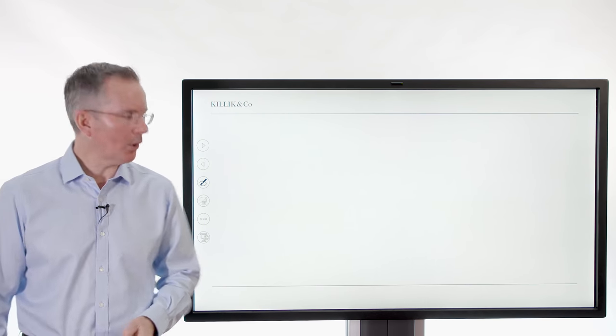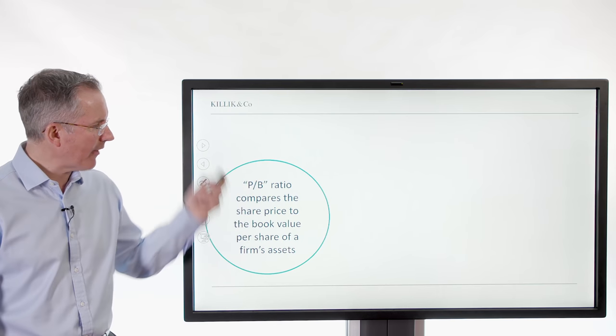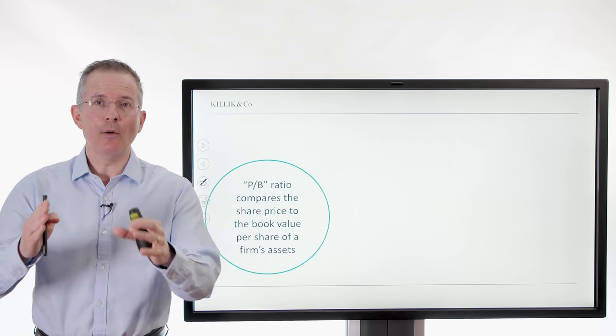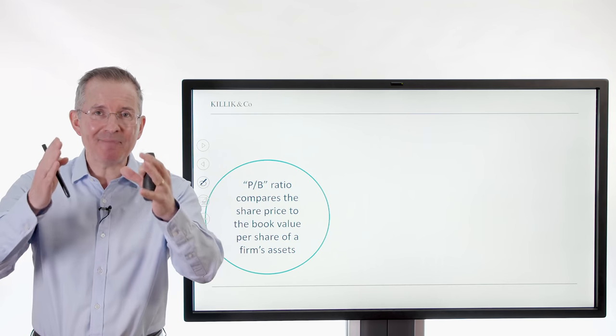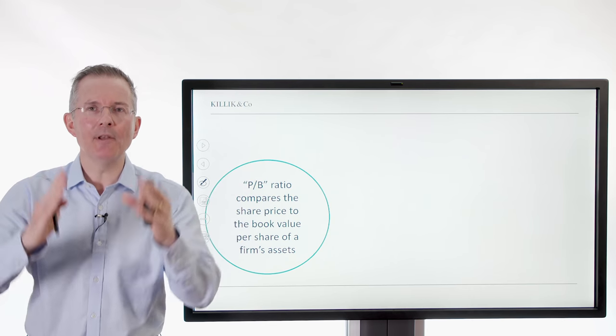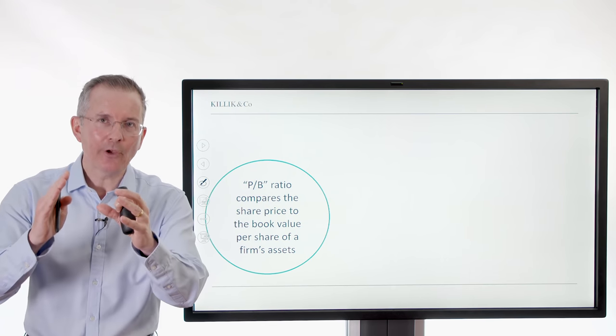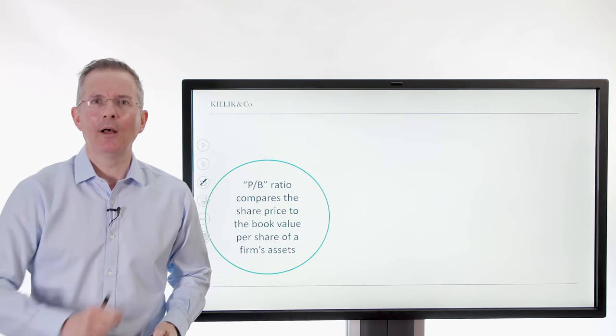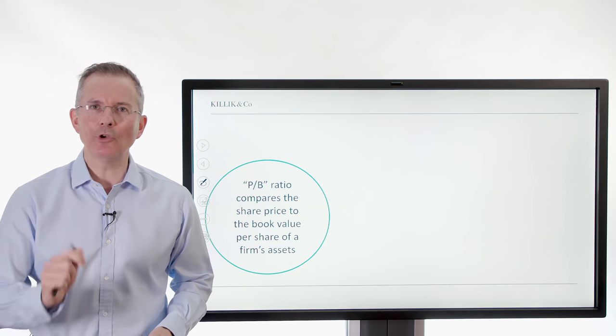A quick reminder first of all. What are we looking at here? The price to book ratio compares the share price of a company to book value per share. So you basically take the balance sheet of the company to get book value per share, look at their assets, divide by the number of shares in issue. That's book value per share. You compare that to the current share price to weigh up is the current share price good or bad value or not.